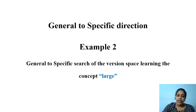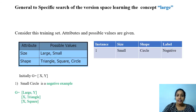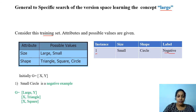Consider another example for finding version space. In this example, we are trying to learn a concept called 'large.' The training set has only one instance, which is of negative classification. Two attributes are given: size and shape. The possible values of size are large and small, and for shape, the possible values are triangle, square, and circle.